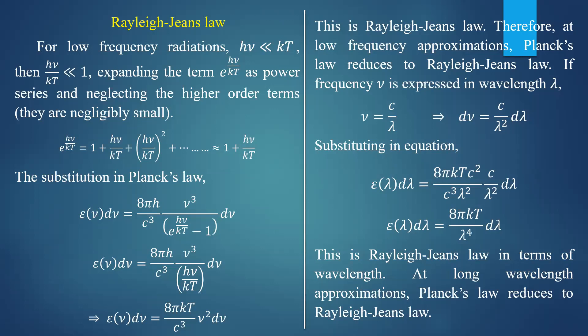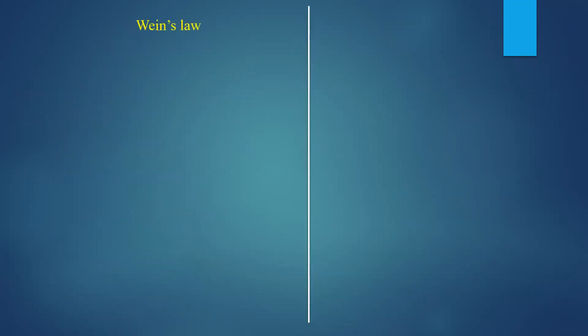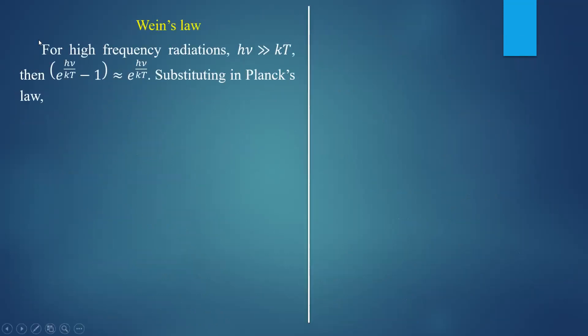Rayleigh-Jeans law can be derived using Planck's law under long wavelength approximation. Next, we'll see what happens to Planck's law if you consider high frequency radiation, or equivalently, smaller wavelength radiation. High frequency radiation is equivalent to smaller wavelength radiation.